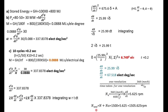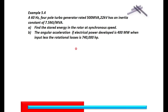This is how we solve the numerical for this example. Now we move to the next problem, which is similar to the first one. It is a 60 Hz, 4-pole turbo generator having 500 MVA capacity, 22 kV, with inertia constant H equal to 7.5 MJ per MVA. We are asked to find the stored energy in the rotor at synchronous speed, and the angular acceleration if the electrical power developed is 400 MW when the mechanical input is 7,400,000 HP.